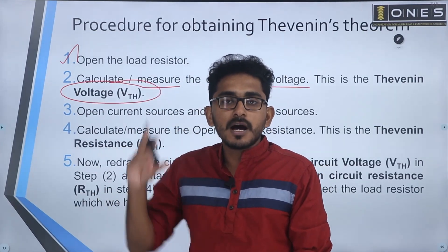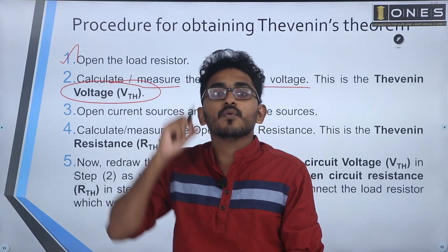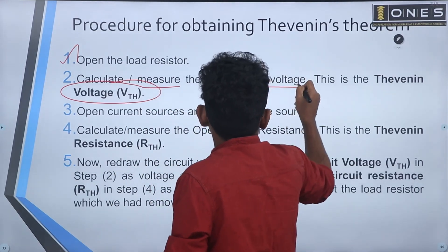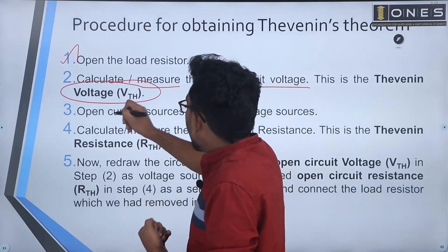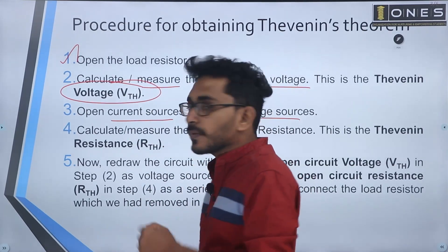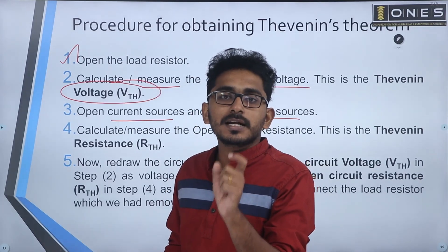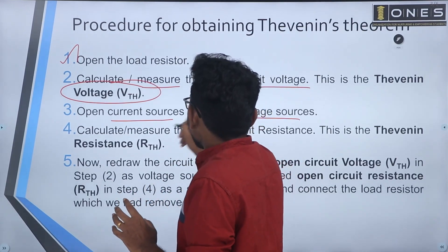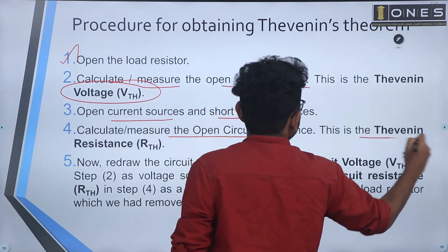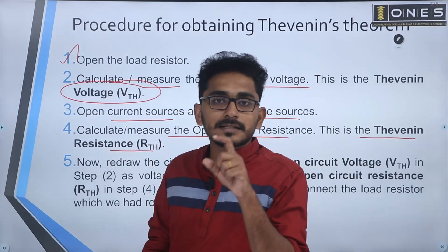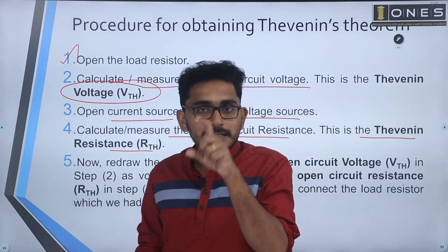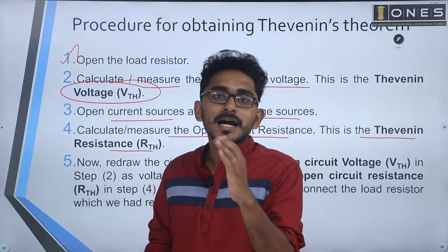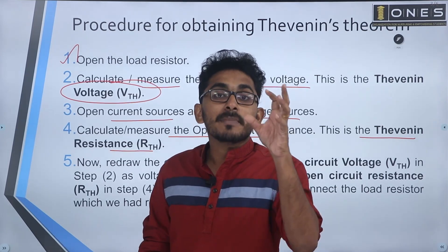Calculate the open circuit voltage across the terminal network. Measure the open circuit voltage — that is Thevenin's voltage. For the current source, open circuit the source; for the voltage source, short circuit the source. Measure the open circuit resistance across the terminals — this is the Thevenin's resistance. Voltage source is replaced by short circuit; current source is replaced by open circuit. Measure the resistance — that is Thevenin's resistance.